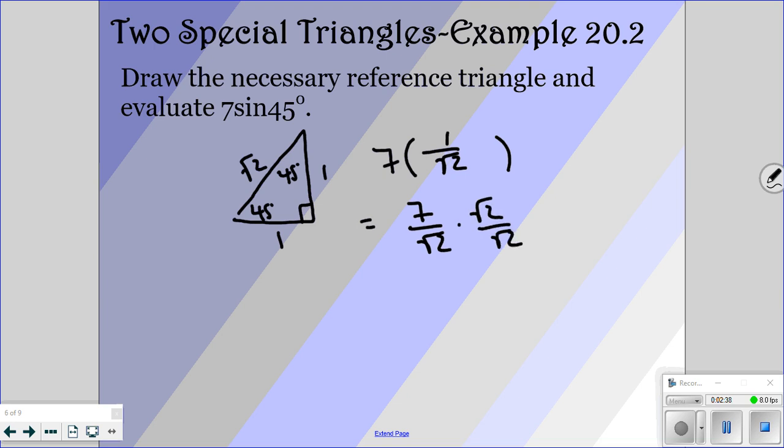So that would be 7 over square root of 2. Which again, if you rationalize it, which you should. We don't want radicals in our denominator. You get 7 square roots of 2 over 2. And so that would be your answer.